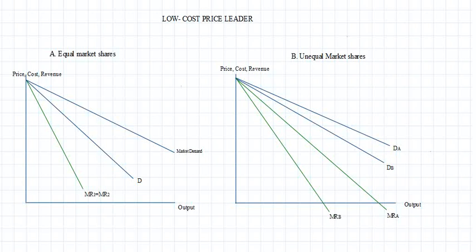In today's session we are going to discuss one of the models of price leadership, which is a special case of collusive oligopoly. Price leadership model can be for multiple reasons, but in many market structures the firm which has the lowest cost structure tends to lead the industry.